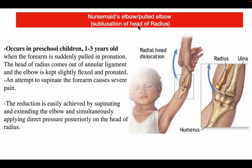Nursemaid's elbow, also known as pulled elbow or subluxation of the head of the radius, occurs in preschool children aged one to three years. When the forearm is suddenly pulled in pronation, the head of the radius slips out of the annular ligament, and the elbow is kept slightly flexed and pronated. An attempt to supinate the forearm causes severe pain. Reduction is achieved by supinating and extending the elbow while simultaneously applying direct posterior pressure on the head of the radius.